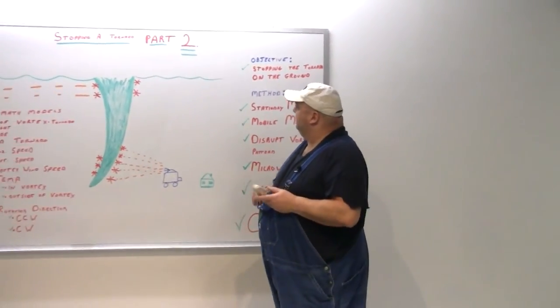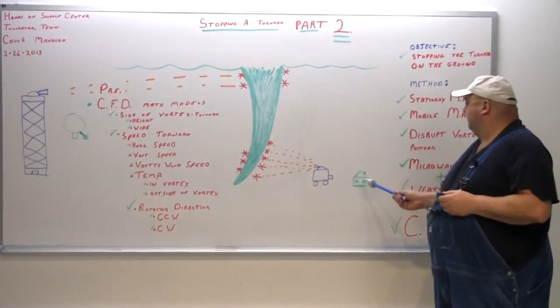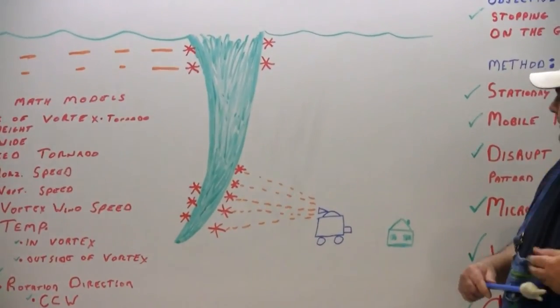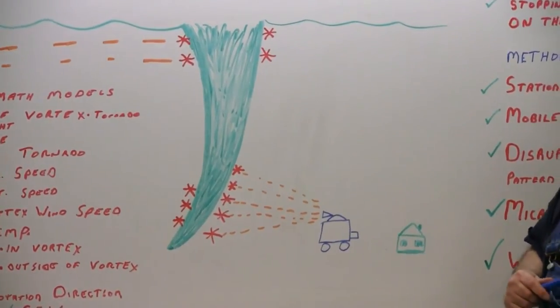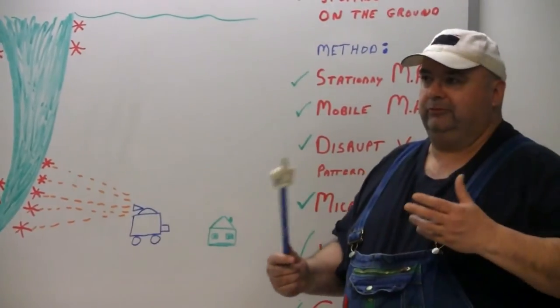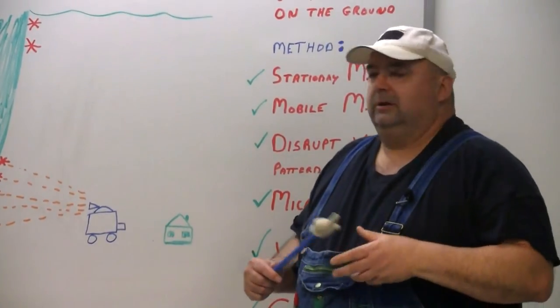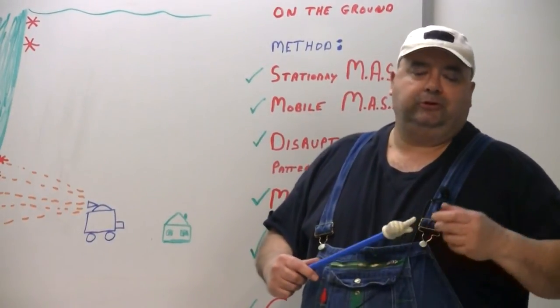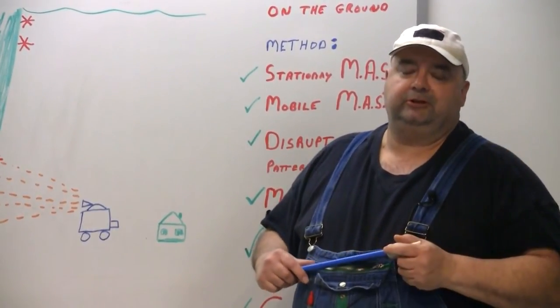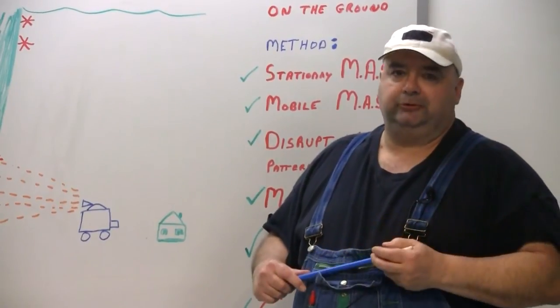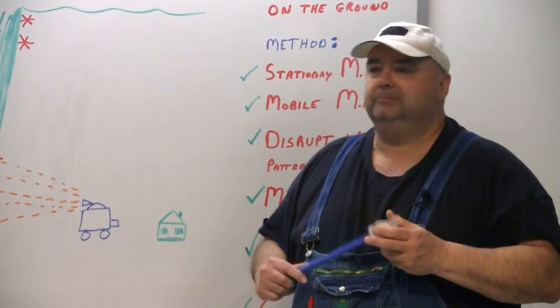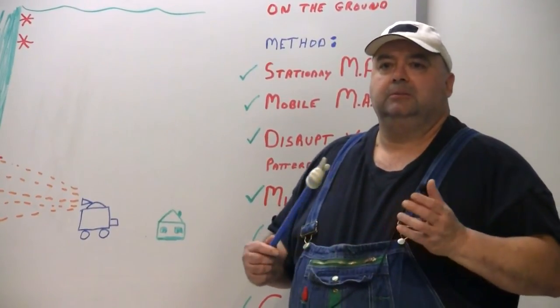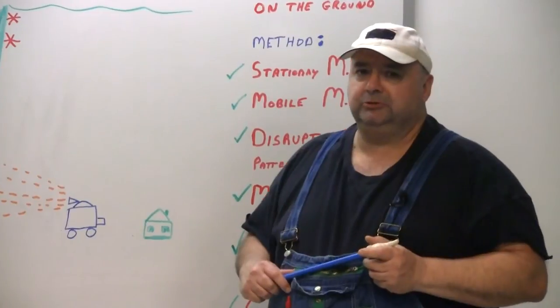Just real briefly, we have the tornado here that's already touched down. We have what we're protecting just hypothetically a house. And the way we'll look at this is as the analogy of the Wright brothers' first flight. When the Wright brothers were flying for the first time, they were not trying to build a 747 or an F-15. They weren't trying to break the speed of sound, go to the moon, et cetera. They were just trying to show that proven flight by man could happen. That was their only objective.